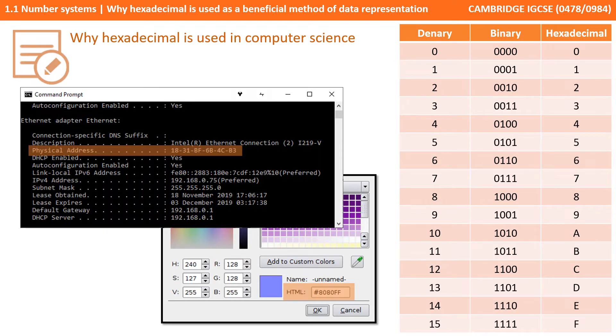So computers don't really use hexadecimal but because of the close relationship between hexadecimal and a binary nibble they become really useful for representing large binary numbers in a smaller number of digits.